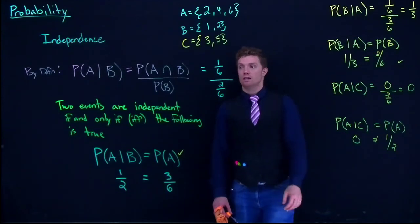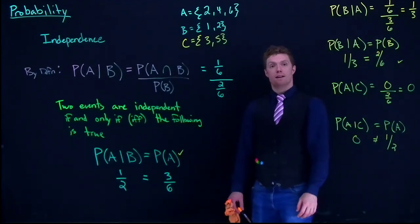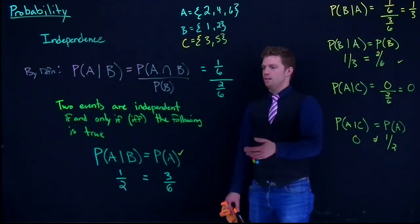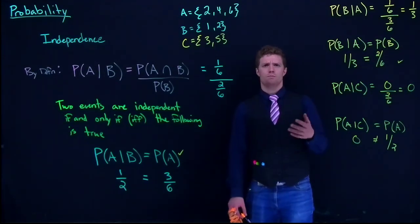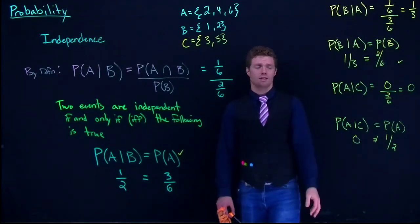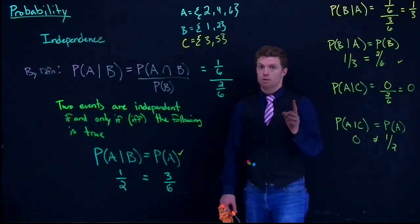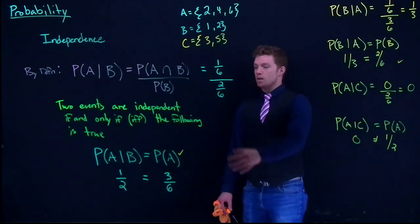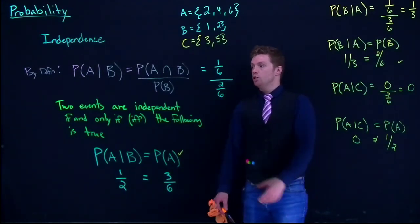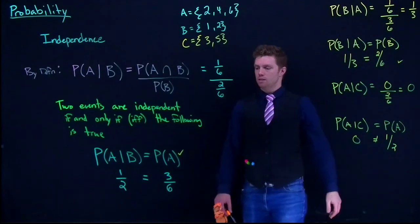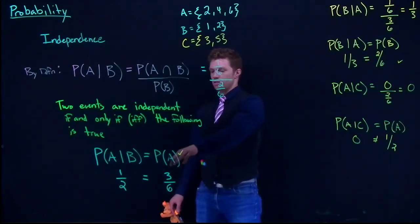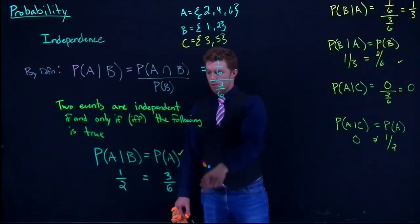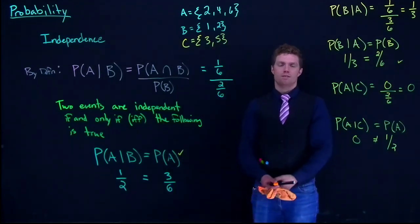That's how you check whether two events are independent. Mutual exclusivity has really nothing to do with independence — mutually exclusive events are most of the time dependent. We simply use our conditional probabilities, check whether P(A|B) equals the probability of A, and if that's true, we have independent events.